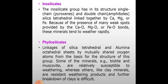Inosilicates: this group has in its structure single-chain pyroxenes and double-chain amphiboles. Silica tetrahedra are linked together by calcium, magnesium, or iron. Because of the presence of many weak bonds provided by Ca-O, Mg-O, or Fe-O bonds, these minerals tend to weather rapidly.